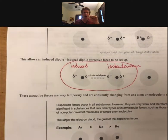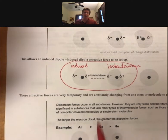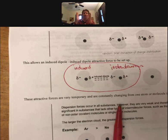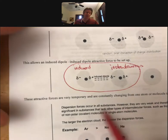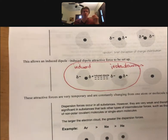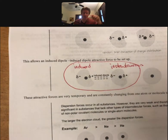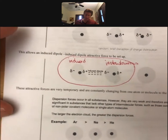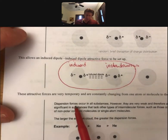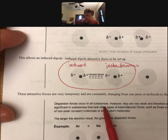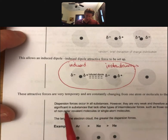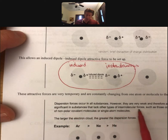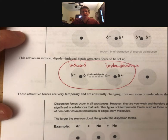However, all atoms have dispersion forces. And as a molecule gets bigger, the dispersion forces get bigger as well, because there are more electron clouds to do just this. Reading now, dispersion forces occur in all substances. However, they are very weak and therefore are only significant in substances that lack other types of intermolecular forces. You've seen on the homework by now.